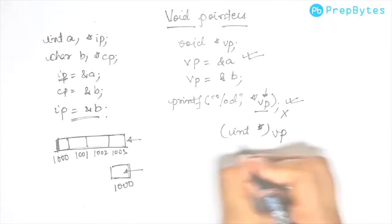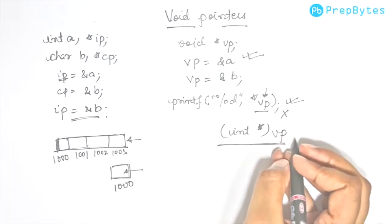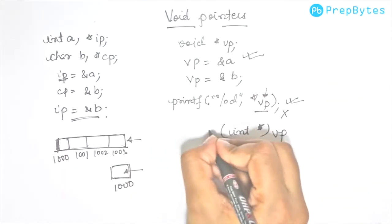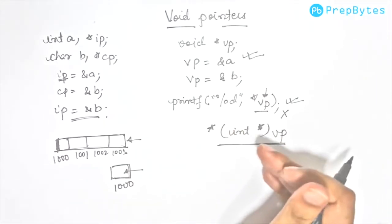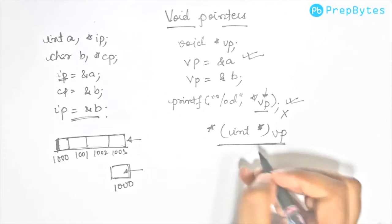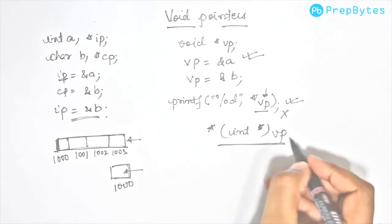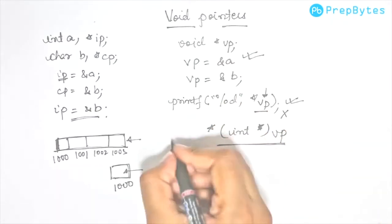Now, since we have typecasted vp to an integer pointer, we can simply access the value stored in this pointer. Note that if we print the value like this...